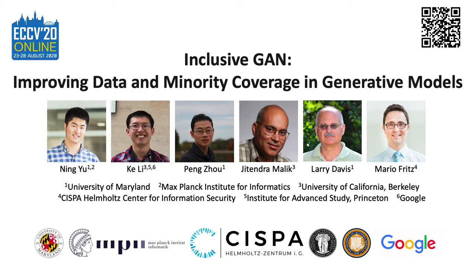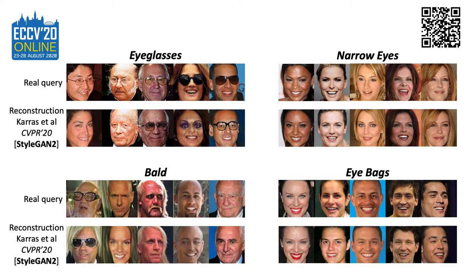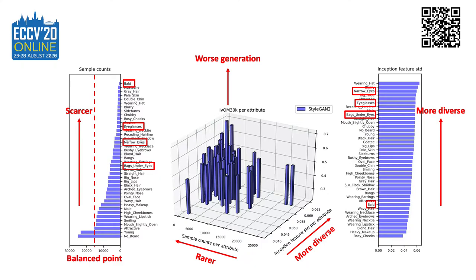We present Inclusive GAN, the first study of minority inclusion in generative models, which is addressed by improving mode coverage. The fair allocation of GAN performance among data subgroups has received little attention, which could lead to potential biases against minorities. The scarcity and diversity of minority training samples lead to their poor generation.